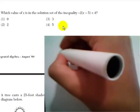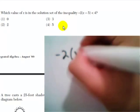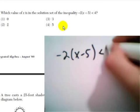First I'm just going to do it in the straightforward algebraic way. We have negative 2 times the quantity x minus 5 is less than 4.